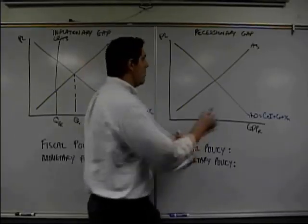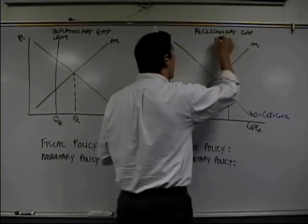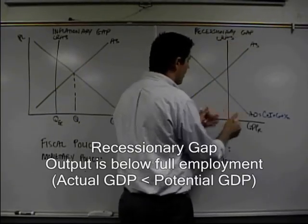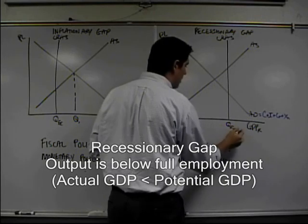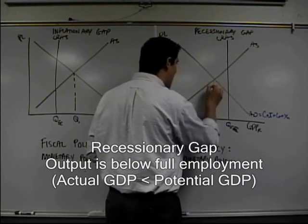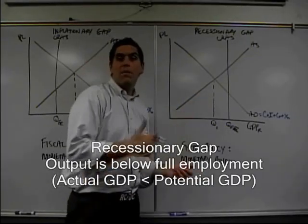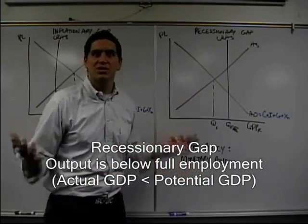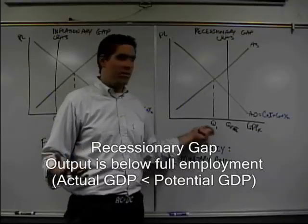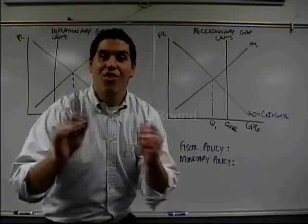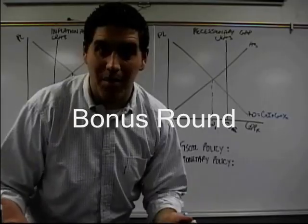Now over here, recessionary gap. Take a look. Long run aggregate supply curve would be over here. This is the quantity full employment. And this is the quantity we're currently at. Right? That's the GDP. We could be producing more, but we're not because we're in a recession. We have eight percent or nine percent unemployment. And that means we could be producing more.